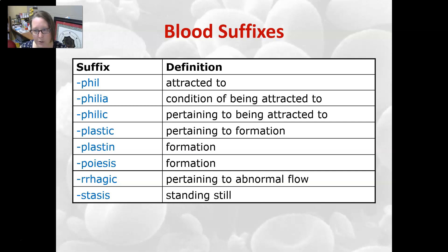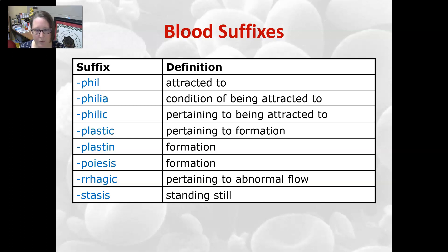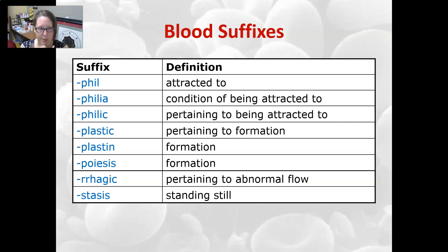Philia is a condition of being attracted to, and philic is pertaining to being attracted to. Plastic is pertaining to formation, as in the formation of blood cells; and plastin is formation, as is poiesis. Rrhagic means pertaining to abnormal flow — think hemorrhagic or hemorrhage, which is an abnormal flow of blood, meaning losing a lot of blood. And stasis is standing still, as in hemostasis, which is blood standing still — meaning clotting or stoppage of bleeding.